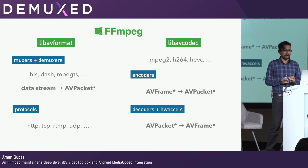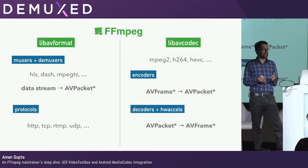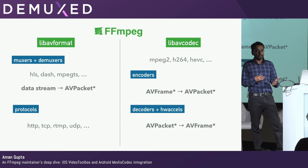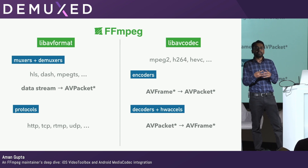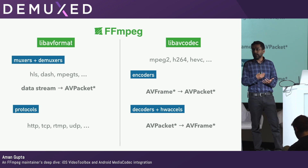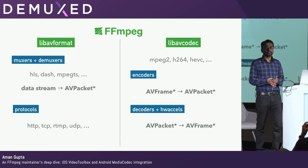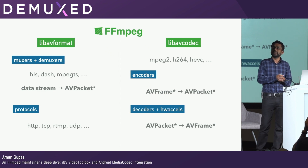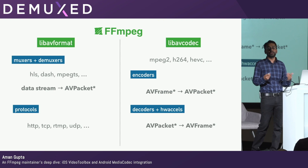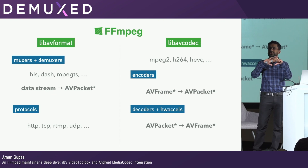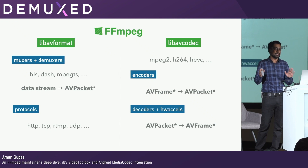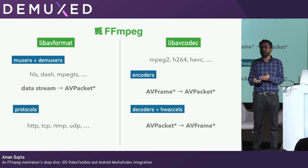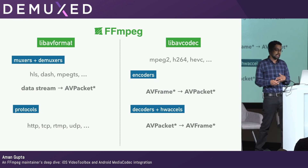There's a distinction between decoders and hardware accelerators that are both inside LibAVCodec. They both have a similar goal — to decode video. Decoders are standalone; for example, FFmpeg has an H.264 decoder that it comes bundled with — that's a software decoder. It also has hardware accelerators. The way hardware accelerators work is you use the regular H.264 decoder, but at certain points instead of actually doing the decoding, it calls into a hardware accelerator. Decoders can be asynchronous, whereas hardware accelerators, because of legacy reasons, the APIs are all synchronous.